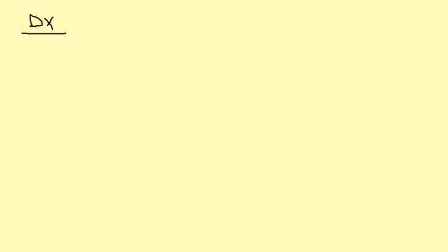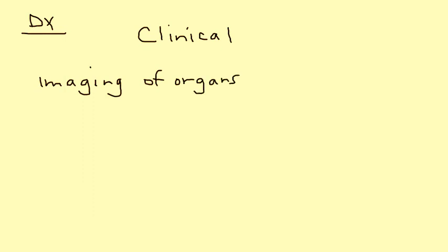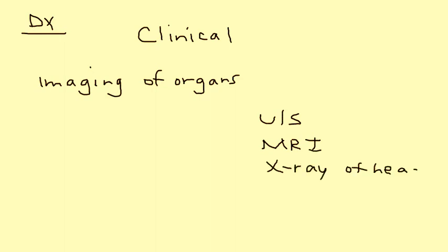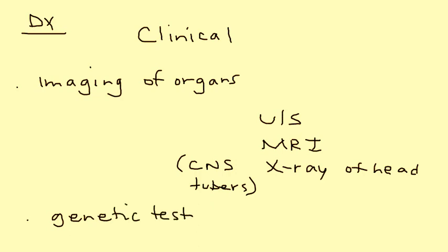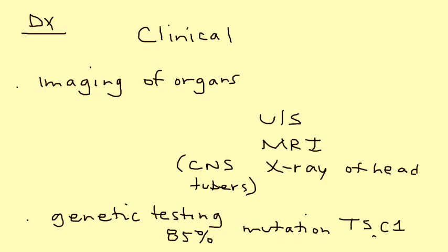How do you diagnose it? It's actually a difficult diagnosis — a lot of it is based on clinical symptoms. But if you're suspicious, you have to do some imaging. Imaging studies include ultrasound, MRI, and x-ray of the head if there's any CNS involvement, looking for tubers in the central nervous system. There's also specific genetic testing available, because 85% of people with tuberous sclerosis will have a mutation in the TSC1 gene — TS for tuberous sclerosis — and that test is definitely available.